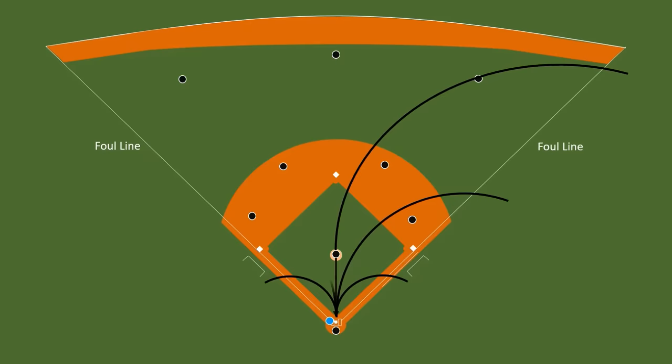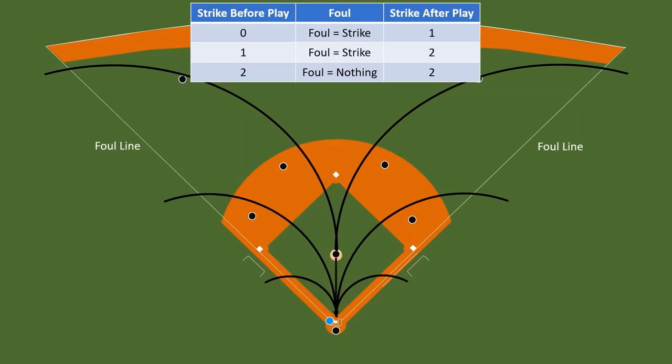So what is a foul ball — is it a strike or a ball? It depends upon the situation. If there's zero strikes and then there's a foul, that is counted as a strike. If there's one strike and it's a foul, then it is counted as a strike. If you have two strikes and then you hit a foul, it doesn't really count. So if you have zero or one strike, the foul is counted as a strike. If you have two strikes, the foul doesn't mean anything.